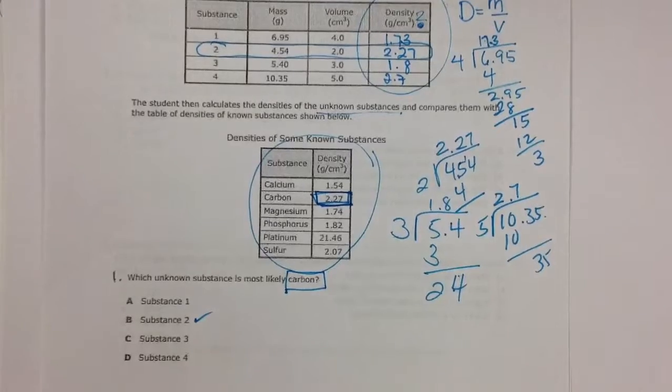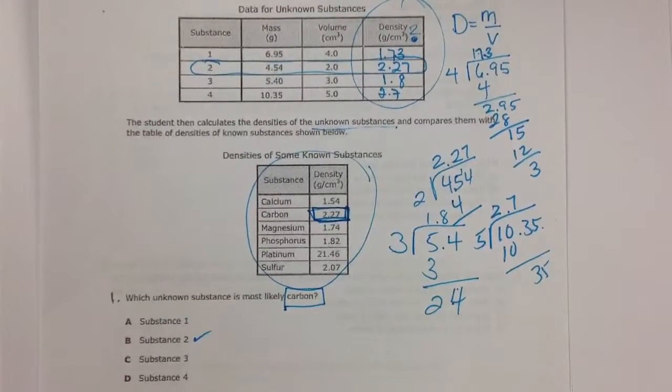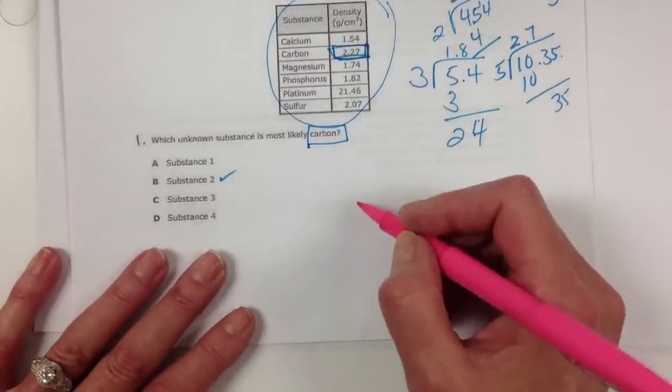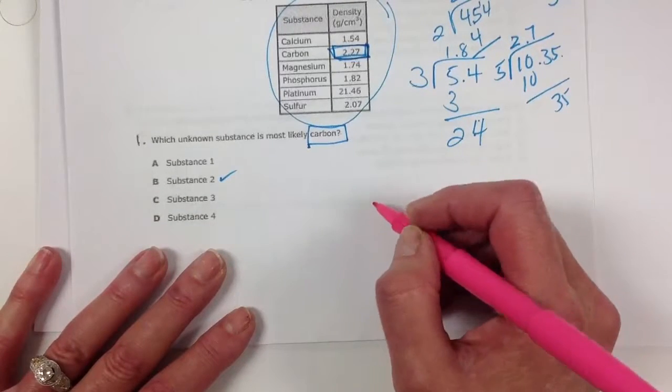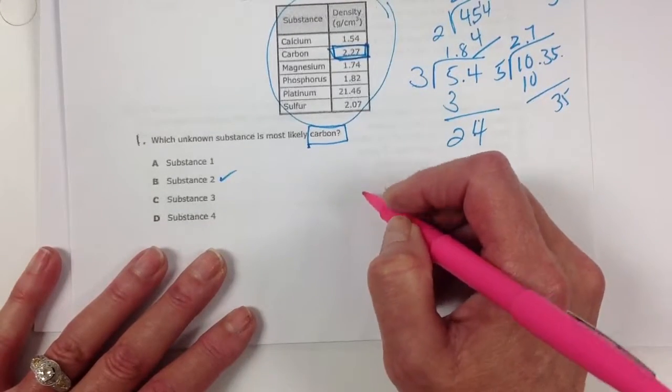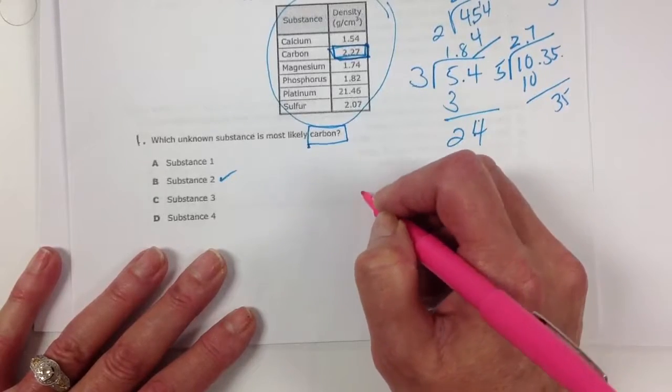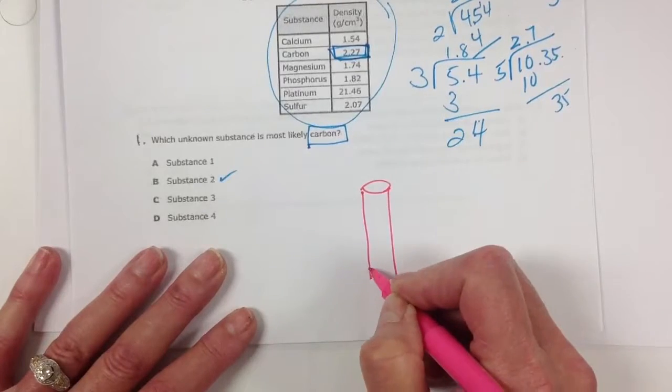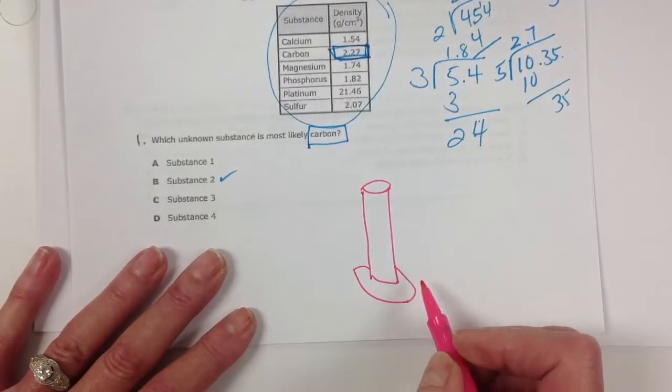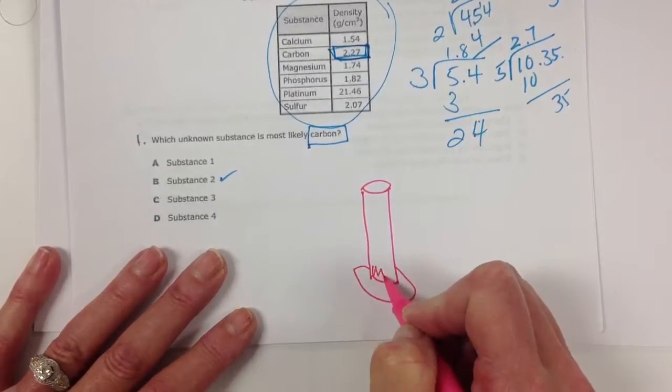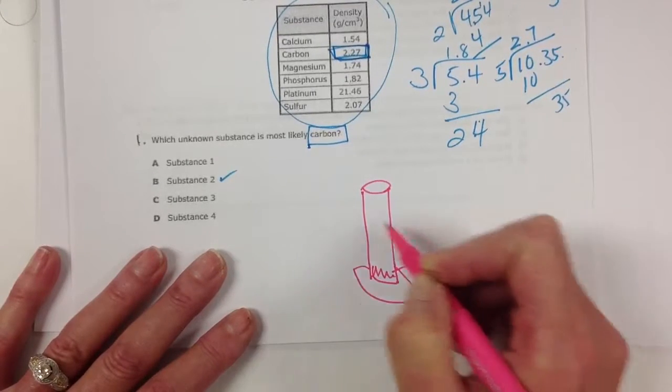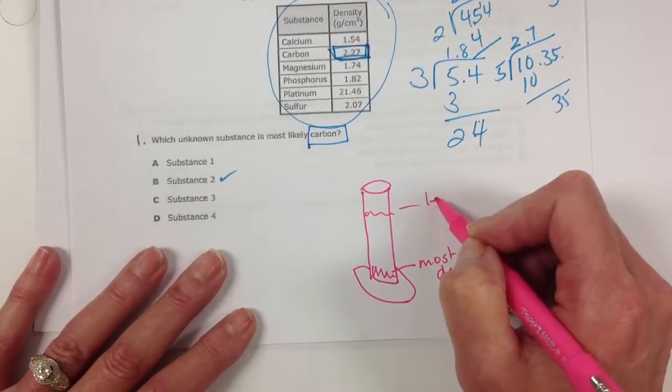Now that kind of goes over the formula in that you do have to calculate it. You can't guess. Some other things that I need you to remember about density. The dense substances will sink. And less dense will float. So if you're looking at a graduated cylinder, you're going to find the most dense here.